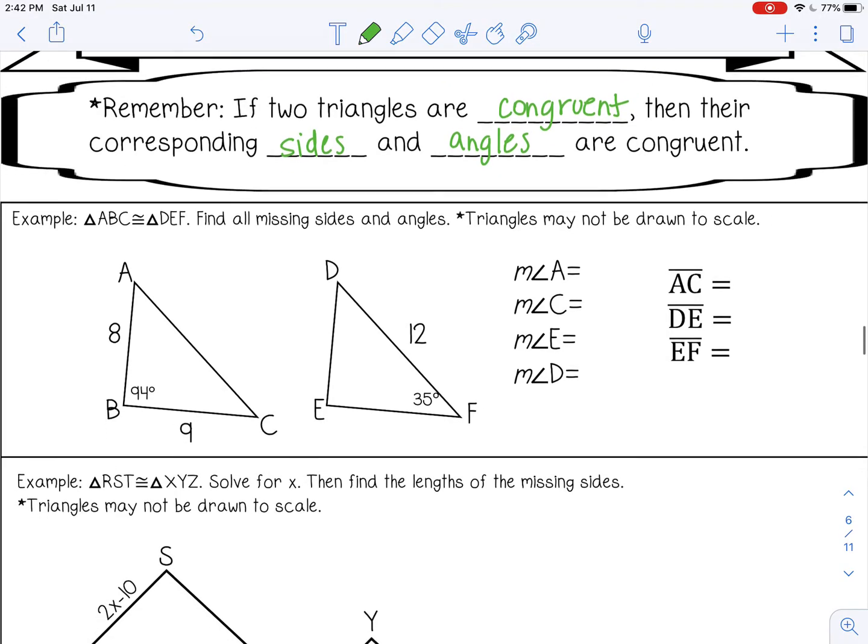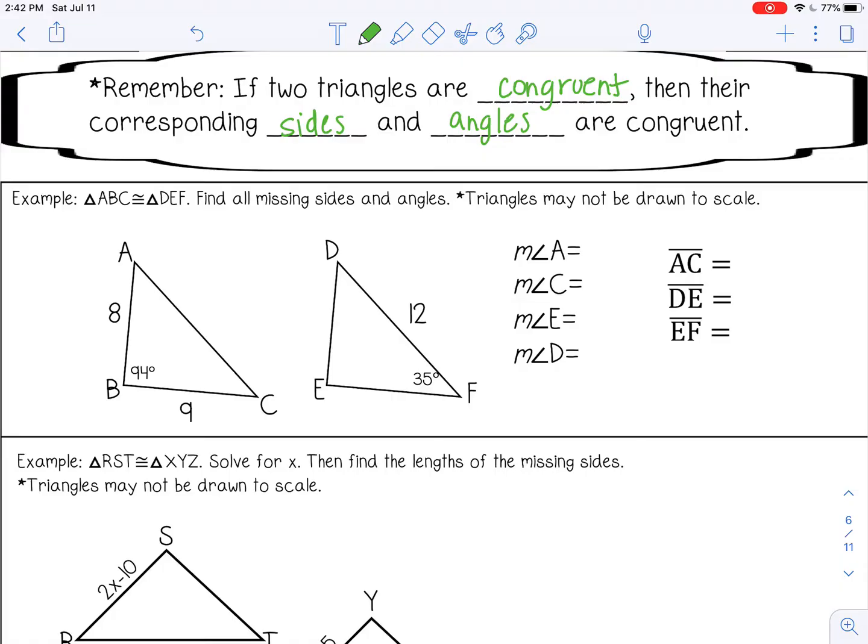In this first example, triangle ABC is congruent to triangle DEF, and we want to find all missing sides and angles. There's a note that triangles may not be drawn to scale. That means the triangles might not look exactly congruent, but we assume they are because we have this congruency statement.